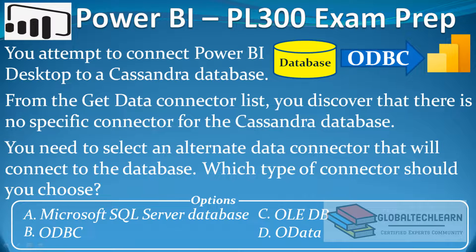Hello friends, welcome to Global TechLearn. In this video we will practice a Power BI exam question related to connection types. You attempt to connect Power BI Desktop to a Cassandra database. From the Get Data connector list you discover that there is no specific connector for the Cassandra database, and you need to select an alternate data connector that will connect to the database.